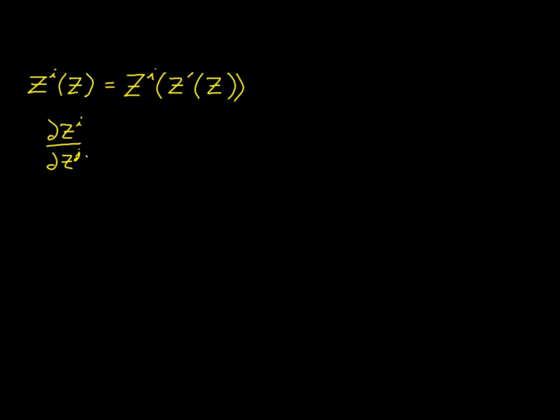Now to complete the differentiation, on the right-hand side we have to start with a partial of z_i with respect to our prime coordinate system, so we'll use the i-prime index here. Then we've got to multiply by the partial derivative of z_i-prime, and this time we'll use the letter z_j again because we've got to match the free indexes. j is here and j is there. i-prime is now a dummy index.